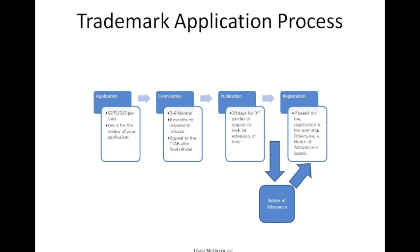If the examiner believes that a refusal is in order, you have six months to respond. If you respond and the examiner doesn't agree with your arguments, that refusal will then become final, at which point your choices are either to allow the application to lapse or to appeal to the Trademark Trial and Appeal Board. Assuming the application does go forward, the next step is publication — 30 days for third parties to oppose or seek an extension of time. If it's a use-based registration, registration is the next step; otherwise, it goes through the notice of allowance process for intent-to-use applications.